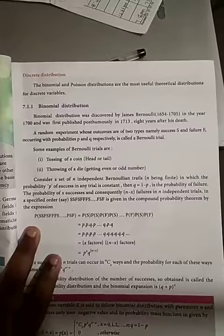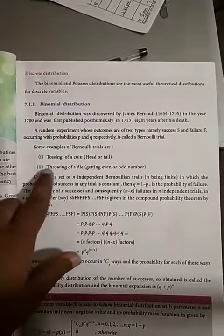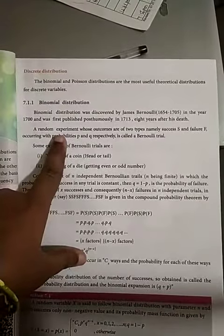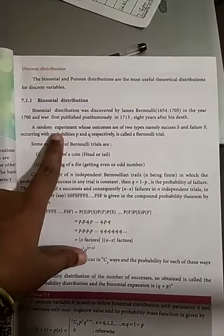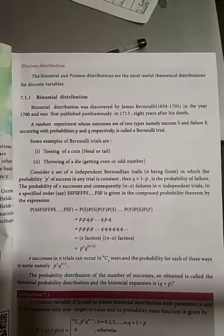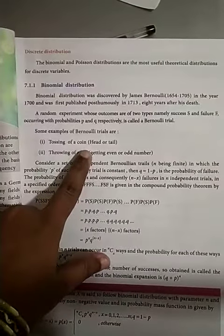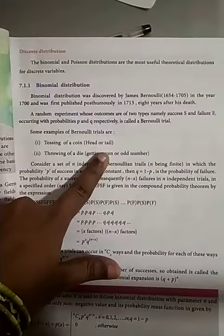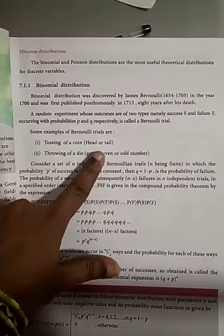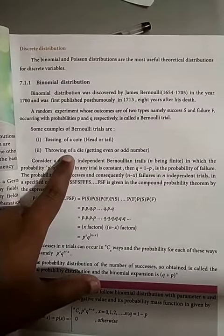When does this binomial distribution come into picture? You do a random experiment, and when the outcomes are only 2 — whatever the experiment may be. For example, tossing a coin: the 2 outputs are only head or tail. Similarly, for a die — a die is a small cube used for playing.